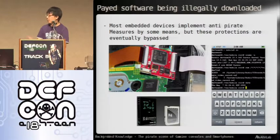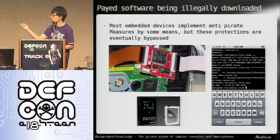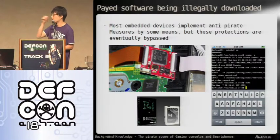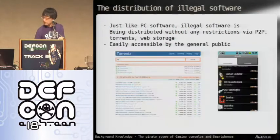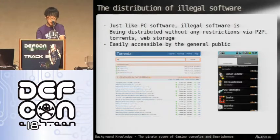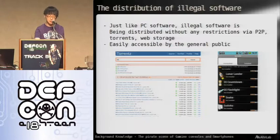A couple of examples are shown on the screen: a hardware modification on the gaming console on the left side, the Nintendo R4 to play free games on the Nintendo DS on the bottom, and everybody's favorite iPhone jailbreak. As soon as someone finds a way to bypass the security on a device and make piracy possible, a massive amount of users dump and crack their games and software and distribute it using torrents, P2P, or web storage like RapidShare.